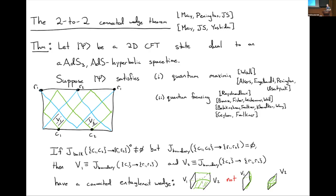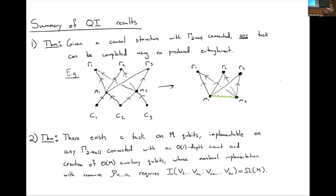Question about the saturated case — what happens when the graph Γ is complete (everything connected to everything)? The speaker says it's amazing that the theorem works when the graph is just connected, and anything stronger doesn't teach you anything new. From the quantum information perspective this isn't surprising: a connected graph is sufficient to do any of these tasks, so more structure wouldn't be expected to let you conclude something stronger. There might be some subtle deeper statement about entanglement beyond just large mutual information, but the speaker doesn't know what it is or whether it would have a clean closed form.